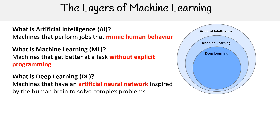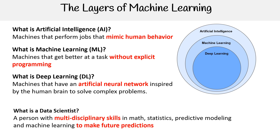Then we have deep learning — machines that have an artificial neural network inspired by the human brain to solve complex problems. And if you're talking about someone that actually assembles either ML or deep learning models or algorithms, that's a data scientist: a person with multidisciplinary skills in math, statistics, predictive modeling, and machine learning to make future predictions.